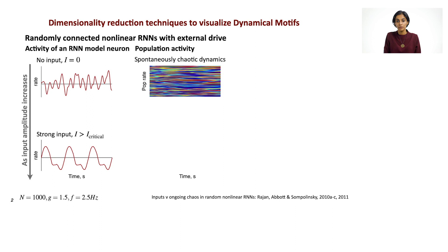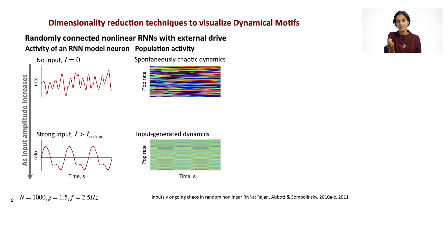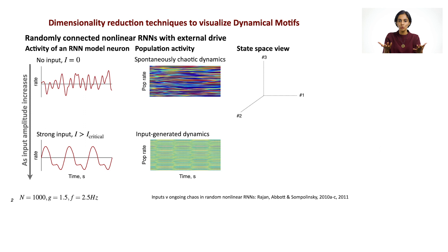We can also visualize these types of dynamics by looking at a population activity plot like you see here, where I've shown the activity of a few hundred units as a function of time in the spontaneously active case, as well as a case in which the intrinsic chaos is quenched and the network pays attention to the external drive. It's useful to also visualize these types of population dynamics with something that our experimental colleagues can also use with data that they collect, and that brings me to the concept of state space views.